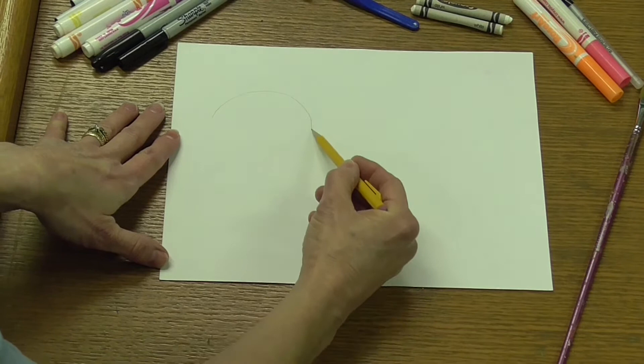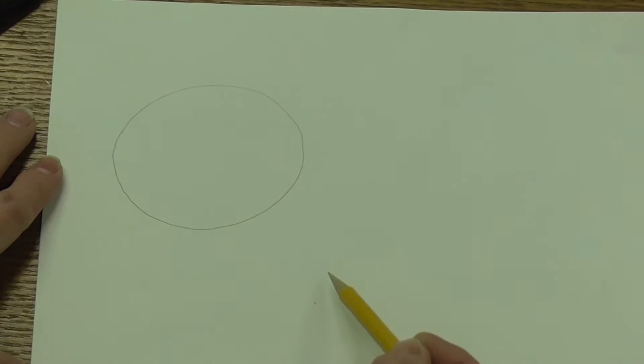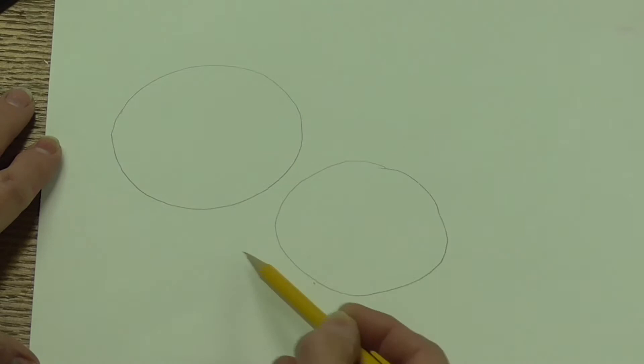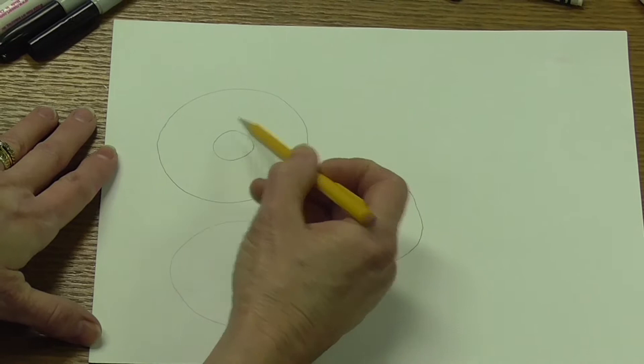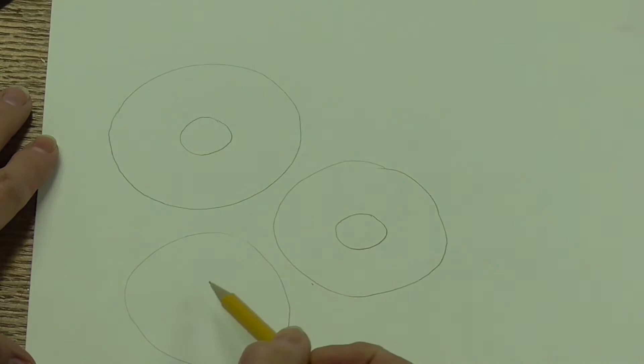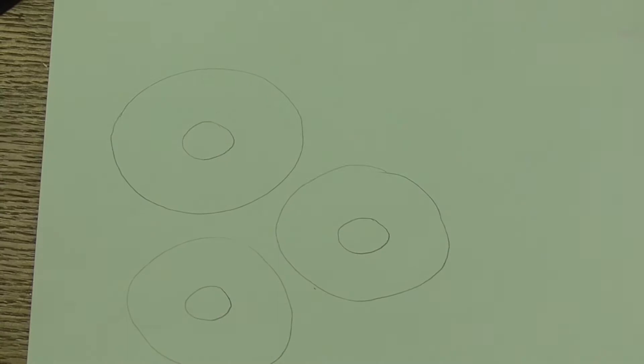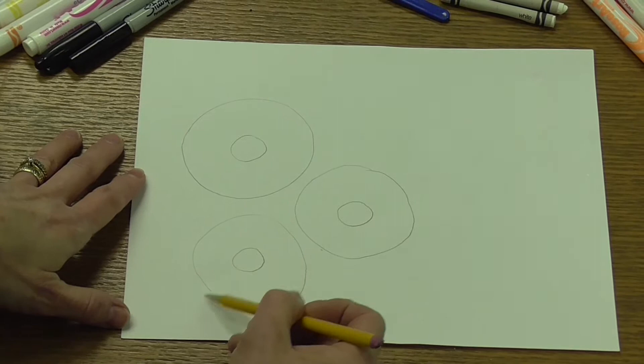Within each circle, I'm going to draw another smaller circle just inside. Remember, you can pause this video at any time if you want to catch up. Now it looks kind of like three little records. I'm going to think about where I want my stem to be, having them turn a little bit to the outside.